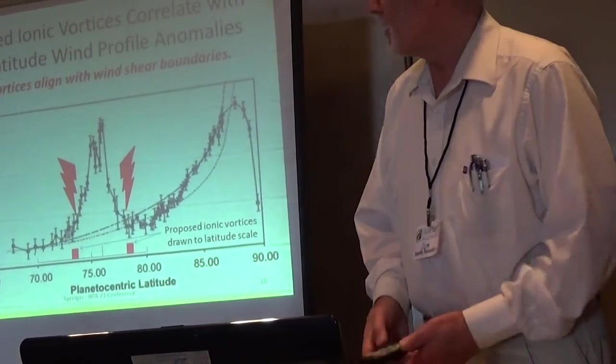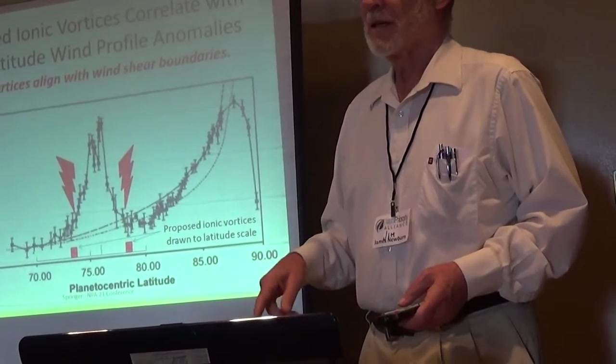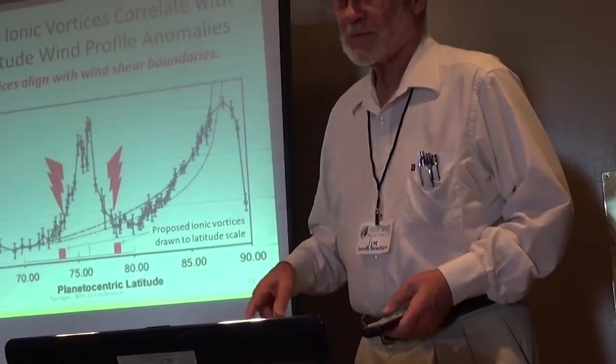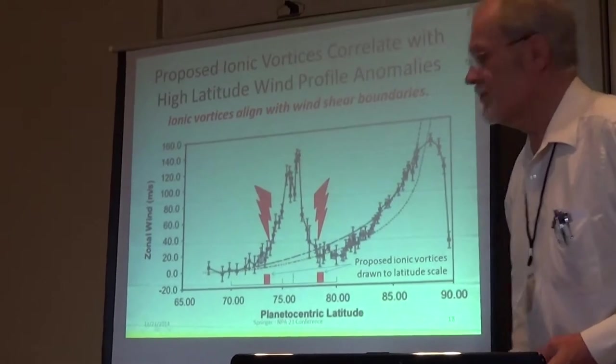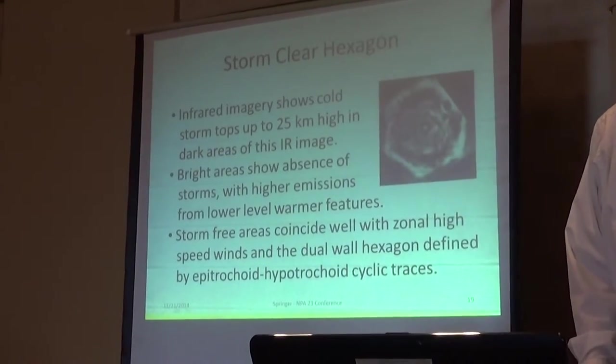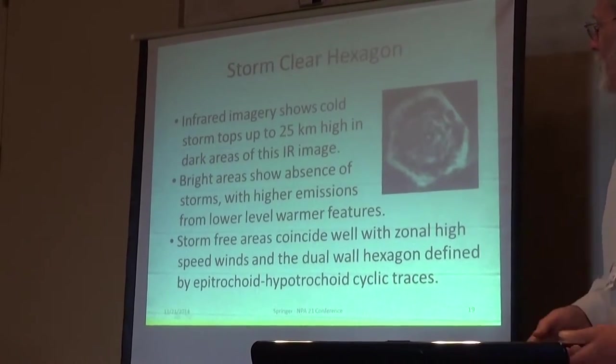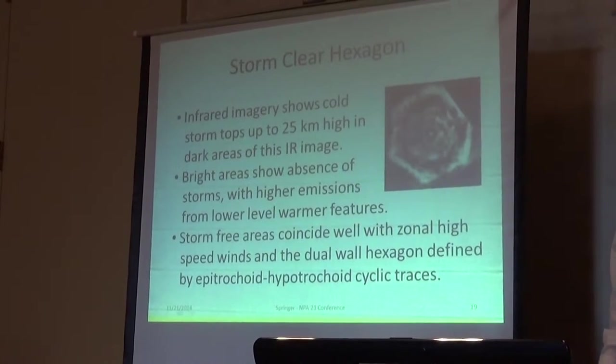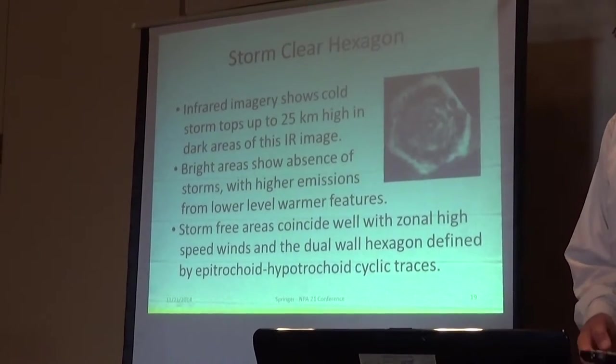And here's a picture, assuming that six-sided structure, showing currents at the low points. This is showing the storm tops can be up to 25 kilometers, and they're dark. The light areas are where there's an absence. They say they're warmer features.